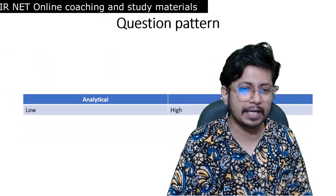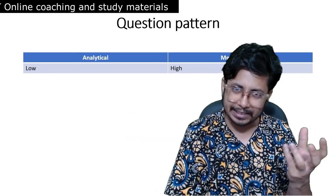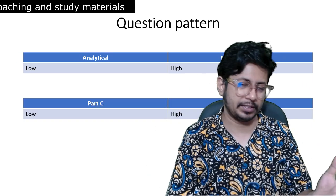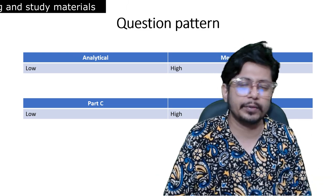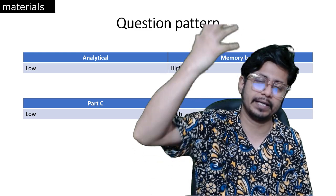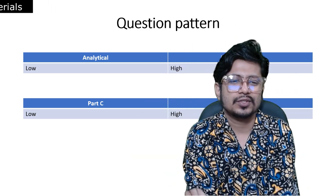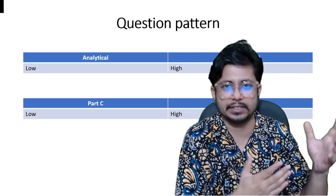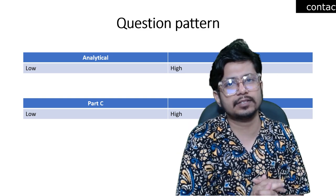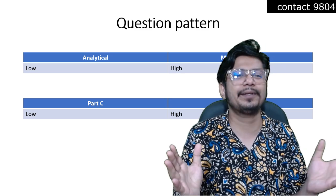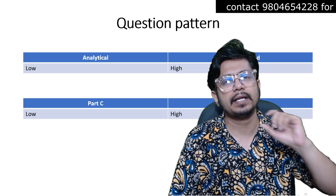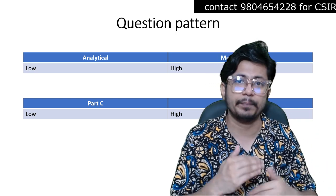The question pattern here features mostly memory-based questions, with very few analytical questions. There will be more Part B questions than Part C questions because these are memory-based direct questions. For example, a question about the pink-headed duck in India — which was present earlier but is no longer with us — has only one correct answer: either you know it or you don't. However, the cladogram analysis and taxonomic part is something you can answer with practice and analysis.